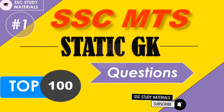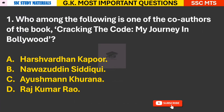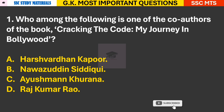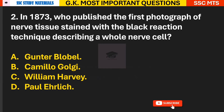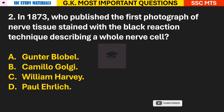Question 1: Who among the following is one of the co-authors of the book 'Cracking the Code: My Journey in Bollywood'? The answer is C — Ayushmann Khurrana.